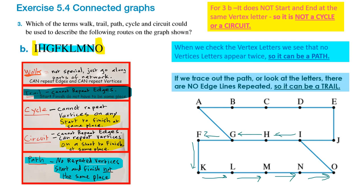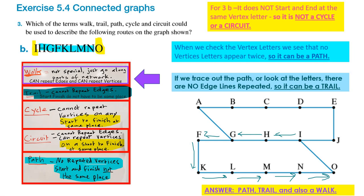Tracing out the journey — I, H, G, F, K, L, N, N, O — and we're stopping at O. We're only going along each edge once, so that is a trail. It's also a path because we're only visiting each vertex once. So this one has multiple answers: it is a path, a trail, and also a walk, because everything is always a walk.